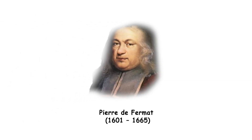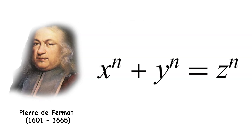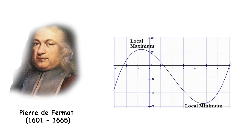Pierre de Fermat was a French lawyer and mathematician known for his work in number theory, analytical geometry, and probability. Fermat's last theorem, conjectured by him in the 17th century, remained unsolved until 1994. He also contributed to the development of calculus and the theory of probability.